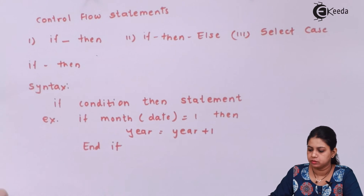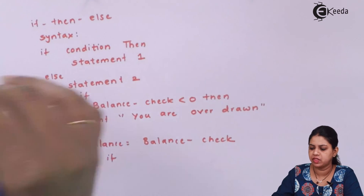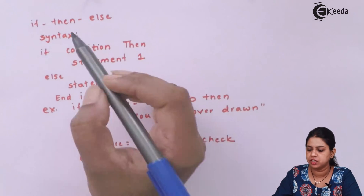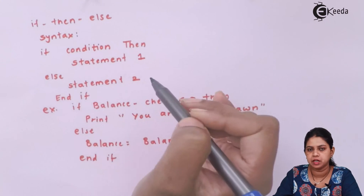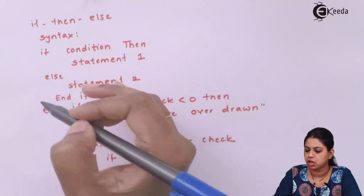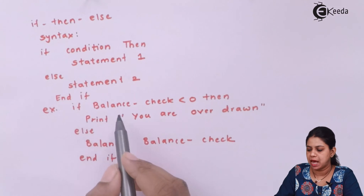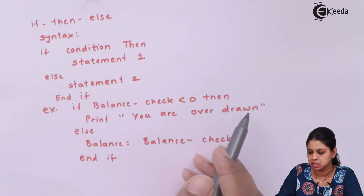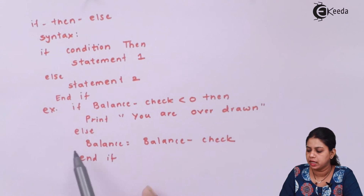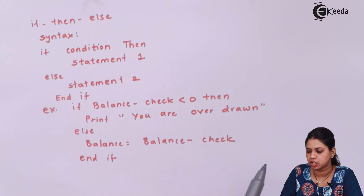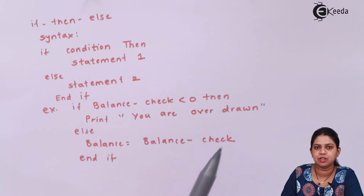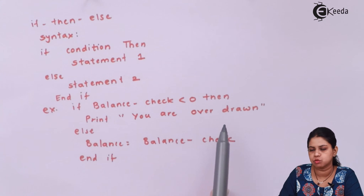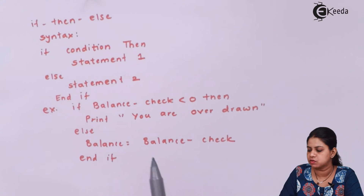Next is If-Then-Else. The syntax is: If condition Then statement one Else statement two End If. For example: If balance minus check is less than zero Then display 'You are overdrawn' and update balance as balance minus check.